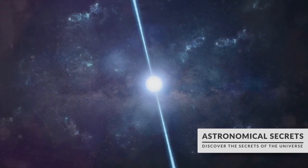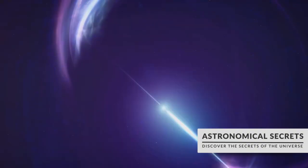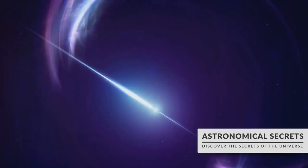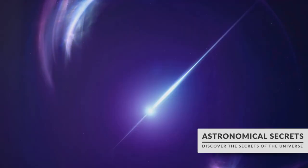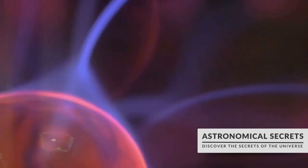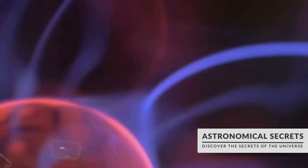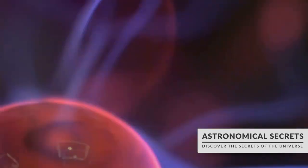This core, now a neutron star, is one of the densest objects in the universe. A spoonful of its matter would weigh about a billion tons on Earth. But sometimes under extreme conditions the neutron star can undergo a further transformation. If the neutron star is massive enough, and the pressure and temperature conditions are just right, the neutrons in the star can break down into their constituent quarks.